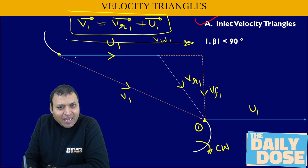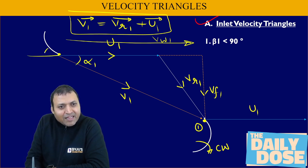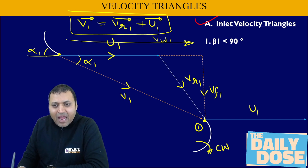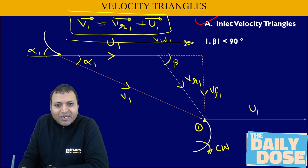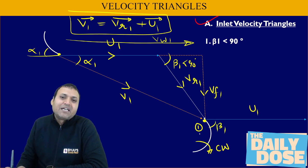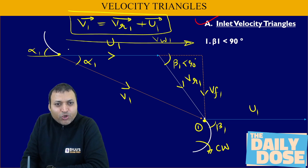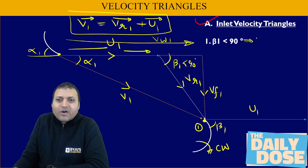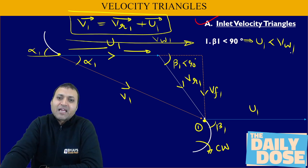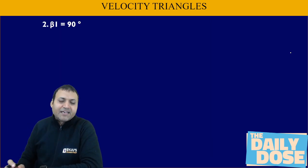The angle made by v1 with the direction of blade motion is alpha 1, the guide vane angle. The angle made by the relative velocity with the direction of blade motion is beta 1, which is less than 90°. When beta 1 is less than 90°, u1 extends only partway along vw1, so we can say u1 is less than vw1. That is the inlet velocity triangle when beta 1 is less than 90°.